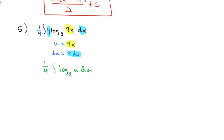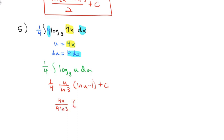Using our formula for log base 3, we get 1/4 times u/(ln 3) · (ln(u) − 1) + C. Substituting u = 4x back in: (4x)/(4·ln 3) · (ln(4x) − 1) + C. The 4's cancel, leaving the final answer: x/ln(3) · (ln(4x) − 1) + C.